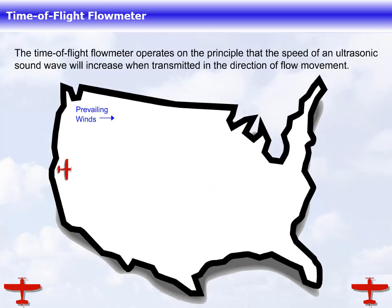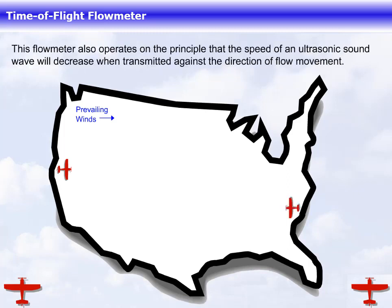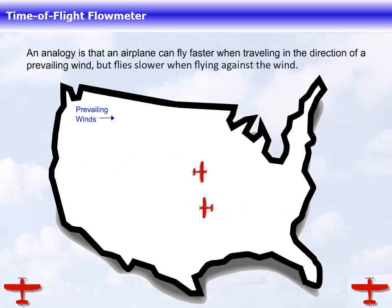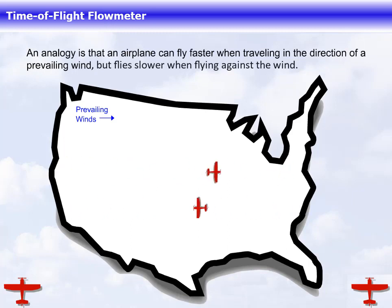The time-of-flight flow meter operates on the principle that the speed of an ultrasonic sound wave will increase when transmitted in the direction of flow movement. An analogy is that an airplane can fly faster when traveling in the direction of a prevailing wind, but flies slower when flying against the wind.